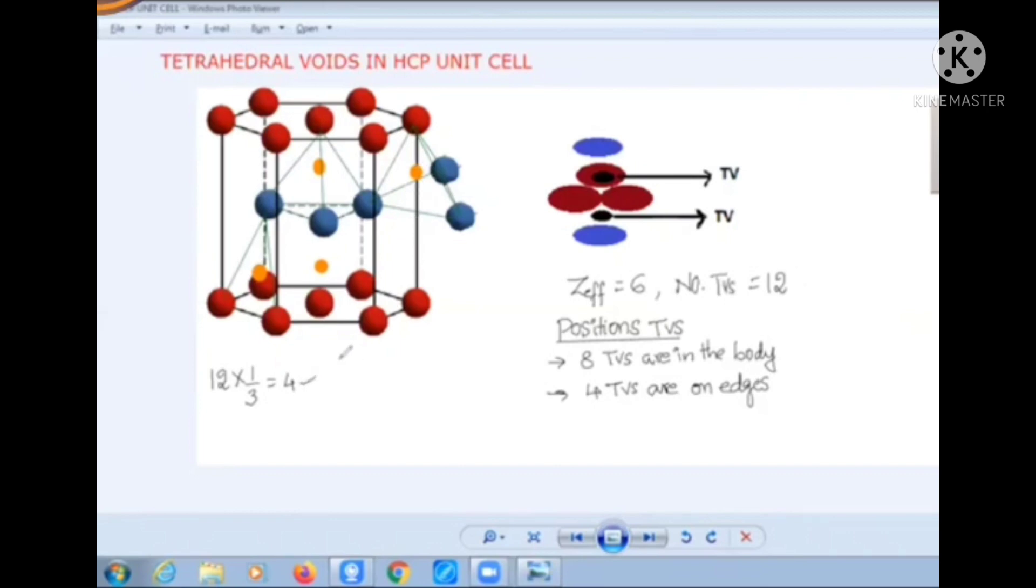And the remaining eight out of 12 tetrahedral voids are found within the body. You can look at them with this diagram. Look at this. These three atoms and this atom together make one tetrahedral void exactly on the line passing through these atoms like this.